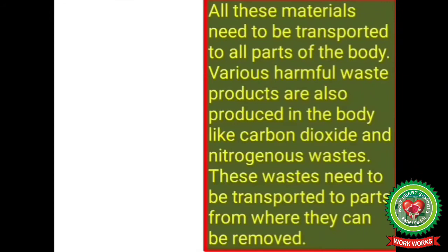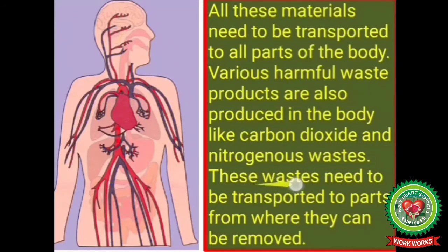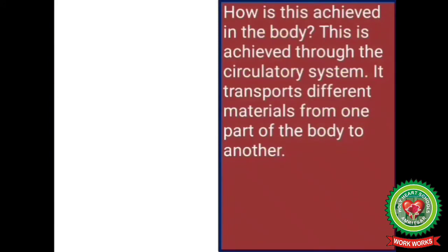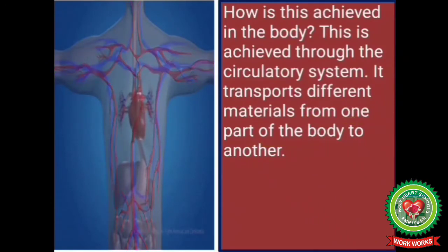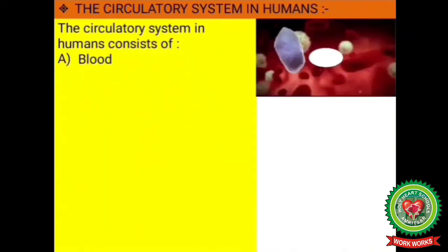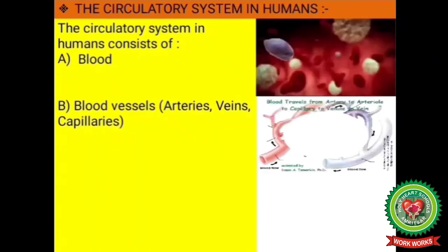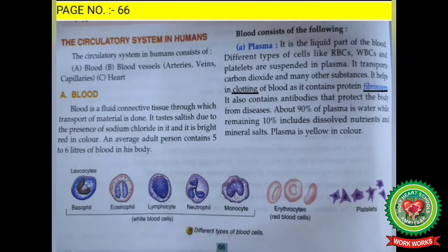All these materials need to be transported to all parts of the body. Various harmful waste products are also produced in the body, like carbon dioxide and nitrogenous waste. These waste products need to be transported to parts from where they can be removed. This is achieved through the circulatory system, which transports different materials from one part of the body to another. The circulatory system in humans consists of blood, blood vessels, and heart.